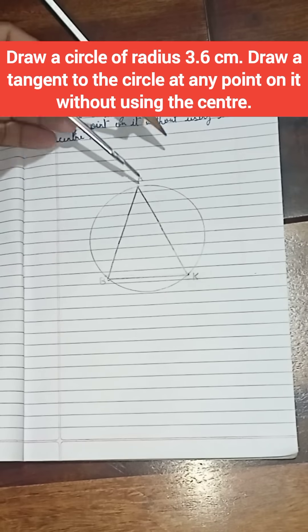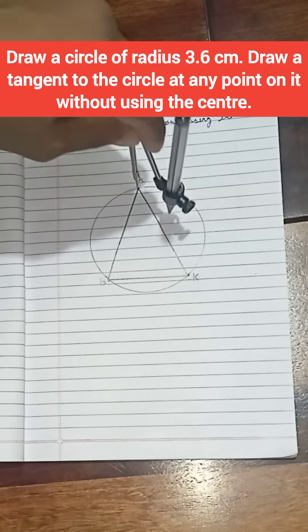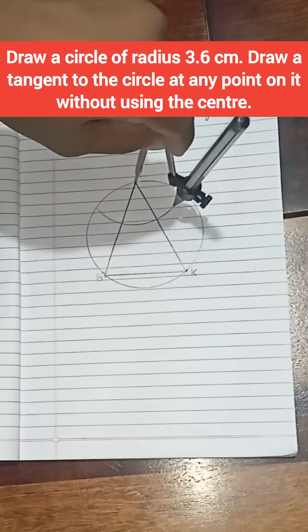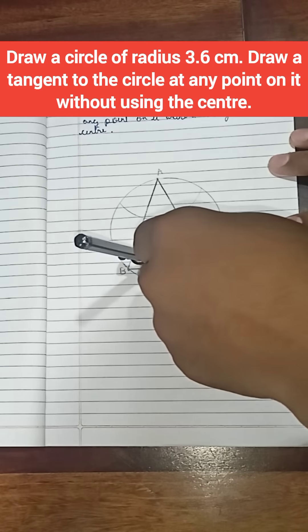Now take a compass and keep it on point A and draw an arc. And keep the rounder on point K and make another arc.